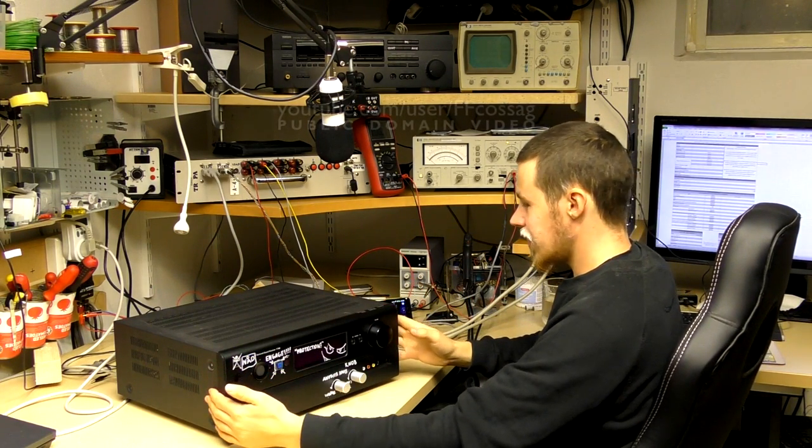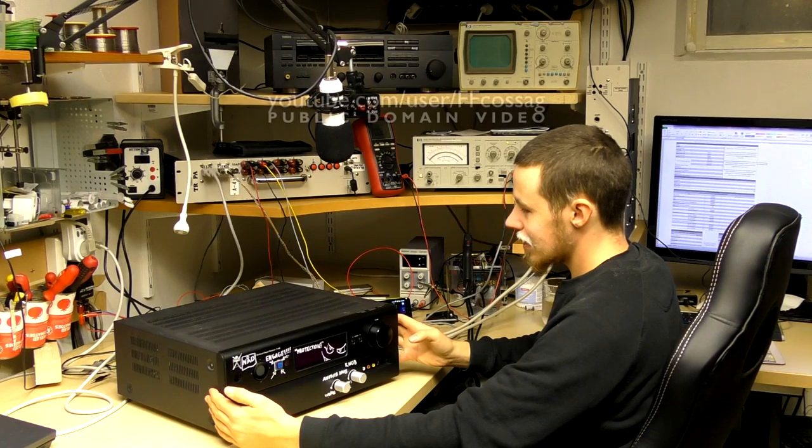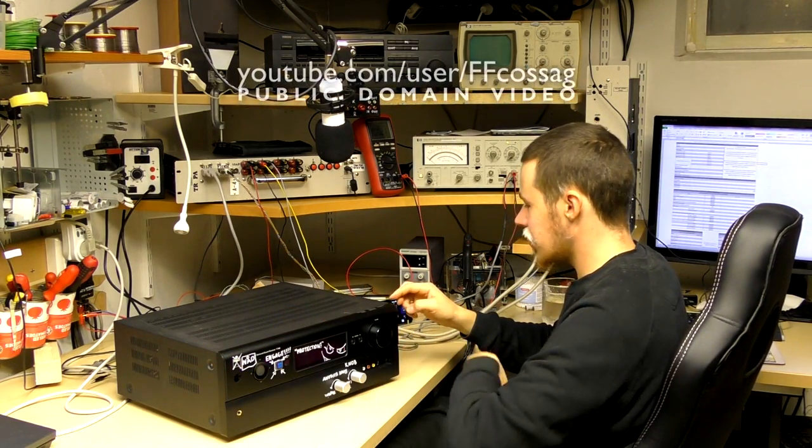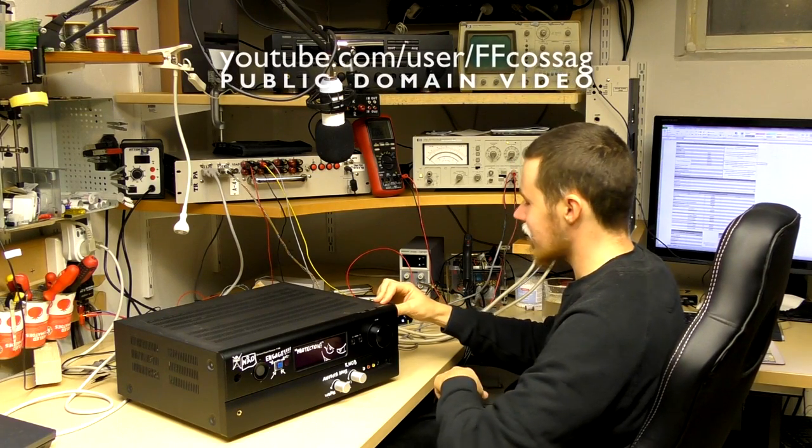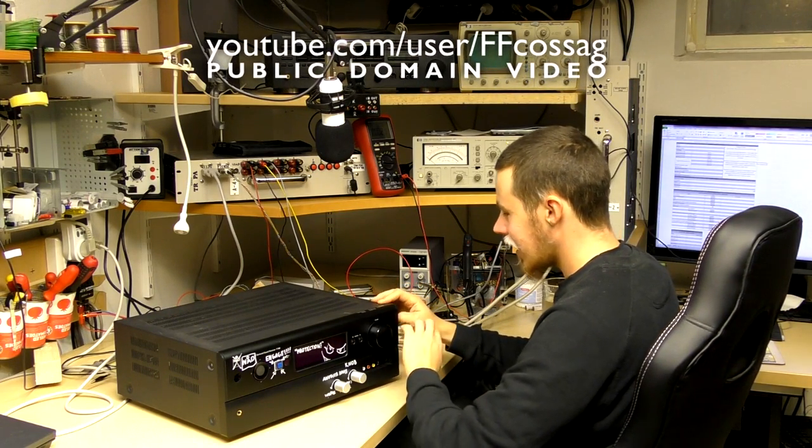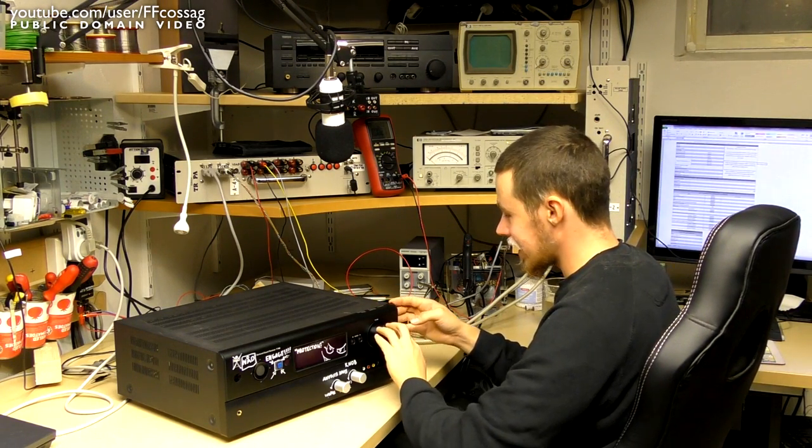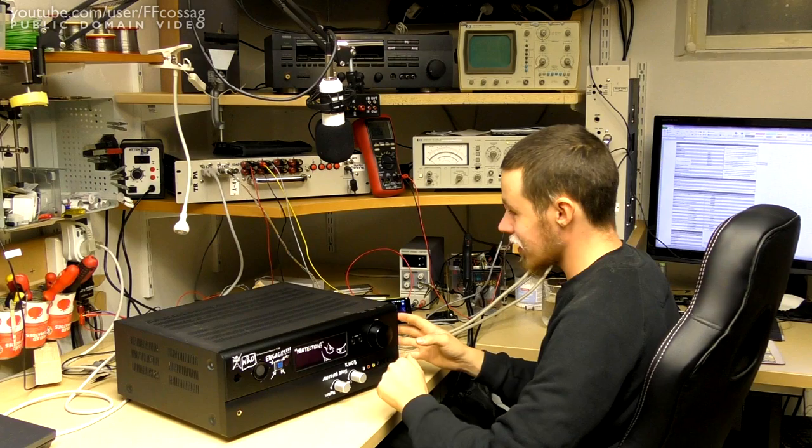For those who aren't even know, this is the NAD T748 surround receiver carcass which we converted to a six channel analog amplifier in a previous video and of course now that we got that working I am deadly curious to find out how this thing actually performs.